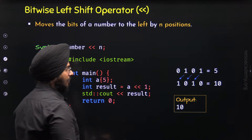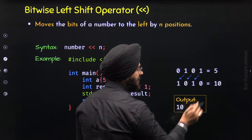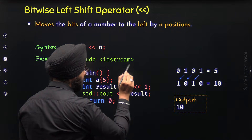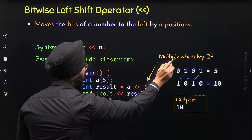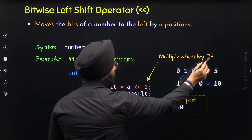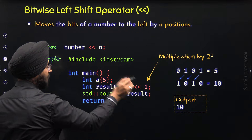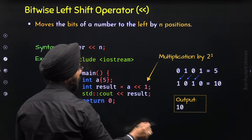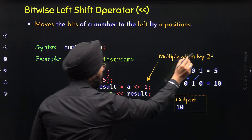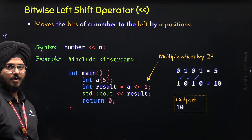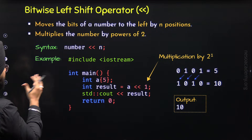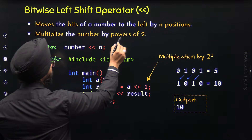Notice that multiplying 5 by 2 gives 10. So a << 1 is the same as multiplying a by 2 to the power 1, where 1 represents the number of shift positions. We can conclude that the bitwise left shift operator allows us to multiply a number by powers of 2.